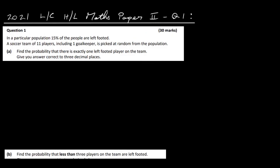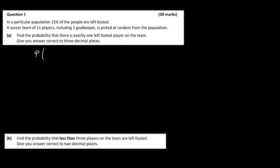Let's have a look at the 2021 Leaving Cert Higher Level Maths Paper 2 question 1. This question is all about Bernoulli trials. Remember our formula, which is on page 33 of your maths tables: the probability of r successes is n choose r, times p to the power of r, times q to the power of n minus r.